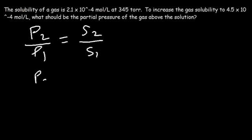So P2 divided by P1, which is 345. By the way, the units for pressure could be Torr, millimeters of mercury, atm, kilopascals. It simply has to match. So if P1 is in Torr, P2 is going to be in Torr.